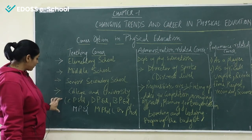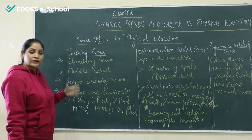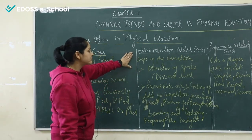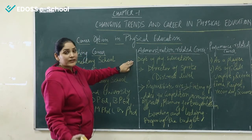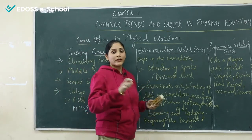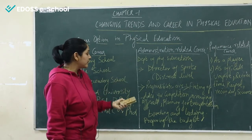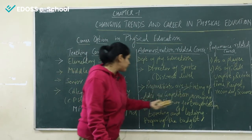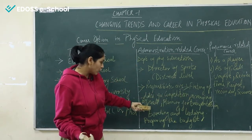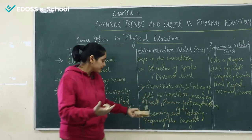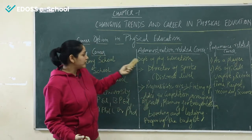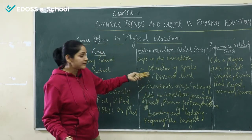Now we will talk about administration-related careers. In administration-related career, there is the Department of Physical Education, which includes the Director of Sports at the district level. Their duties and responsibilities include fixing dates for competitions, arranging officials, planning for transportation, boarding and lodging, and preparing the budget. These are the responsibilities of the Director of Sports at the district level.